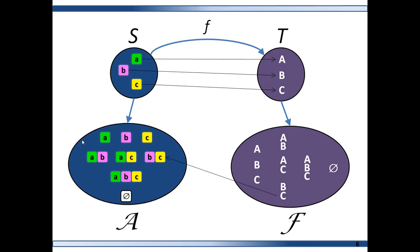But now notice that each of the elements in the sigma algebra F can map to an element in the sigma algebra A. For example, capital BC maps to little bc. Now f is a measurable function, and I'll name this sort of inverse set function f-inverse. So essentially f-inverse takes subsets of the range of f as its argument and returns subsets of the domain of f.